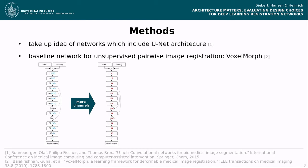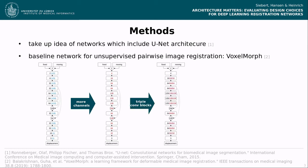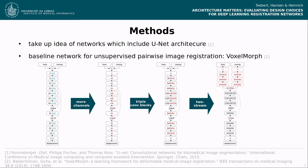The first modification we make to this initial architecture is to double the number of feature channels of all convolution layers of the network. We then extend the number of convolution–instance norm–ReLU sequences per resolution level to three. Finally, we propose a two-stream architecture with separate encoder blocks for fixed and moving image, and their concatenated output as input for the U-Net part of the architecture. As we use monomodal data for our experiments, the weights are shared between the two encoders of this two-stream architecture.